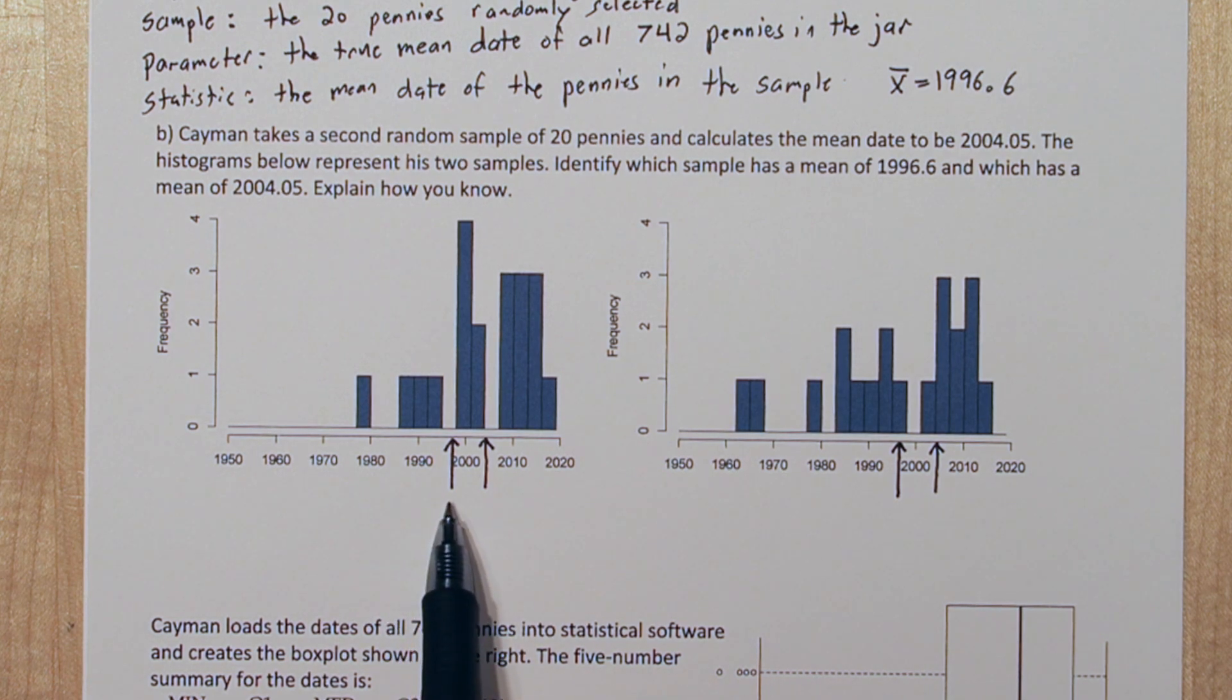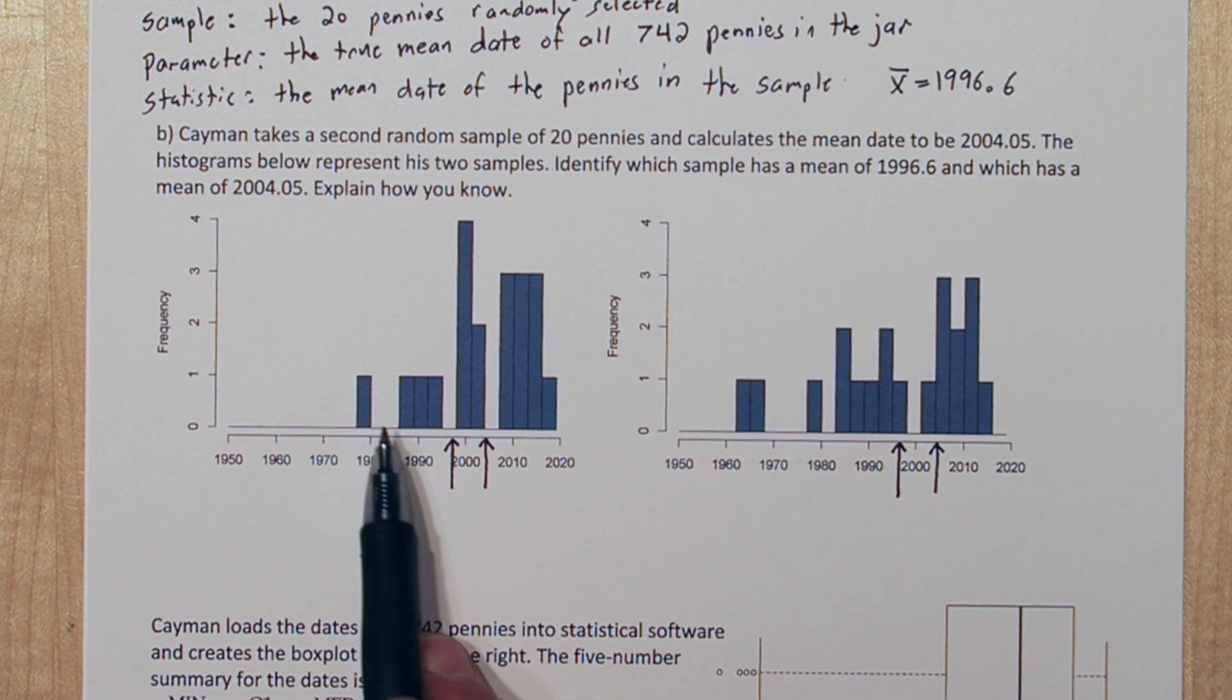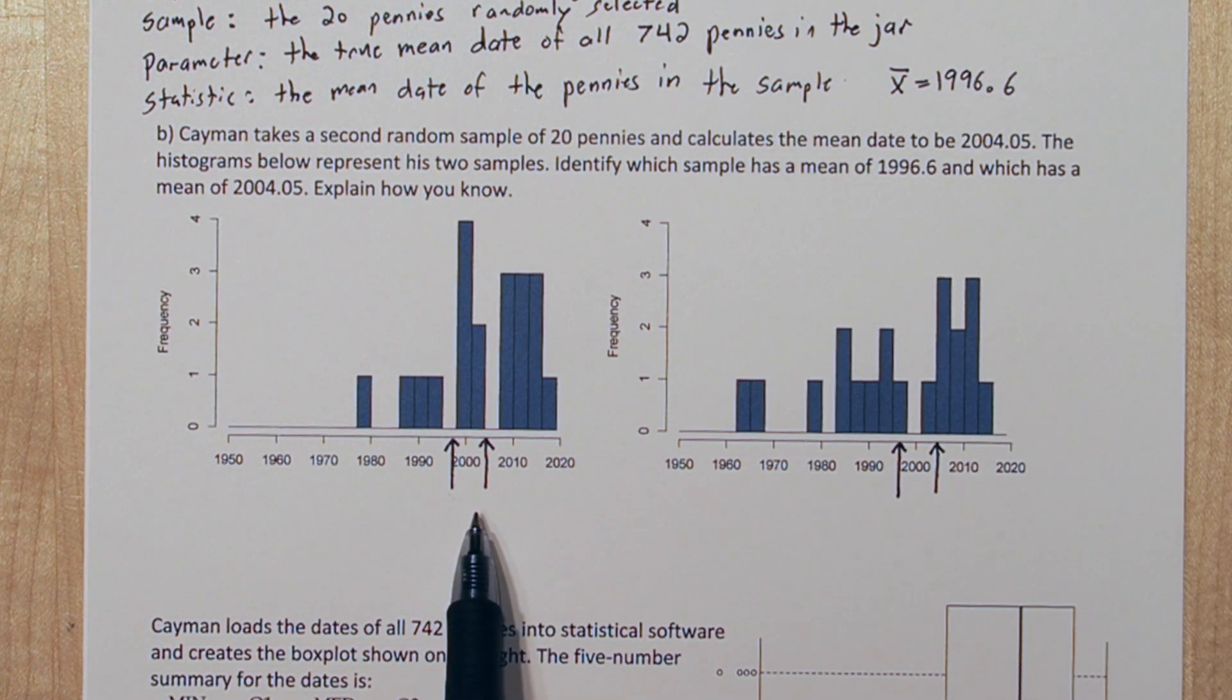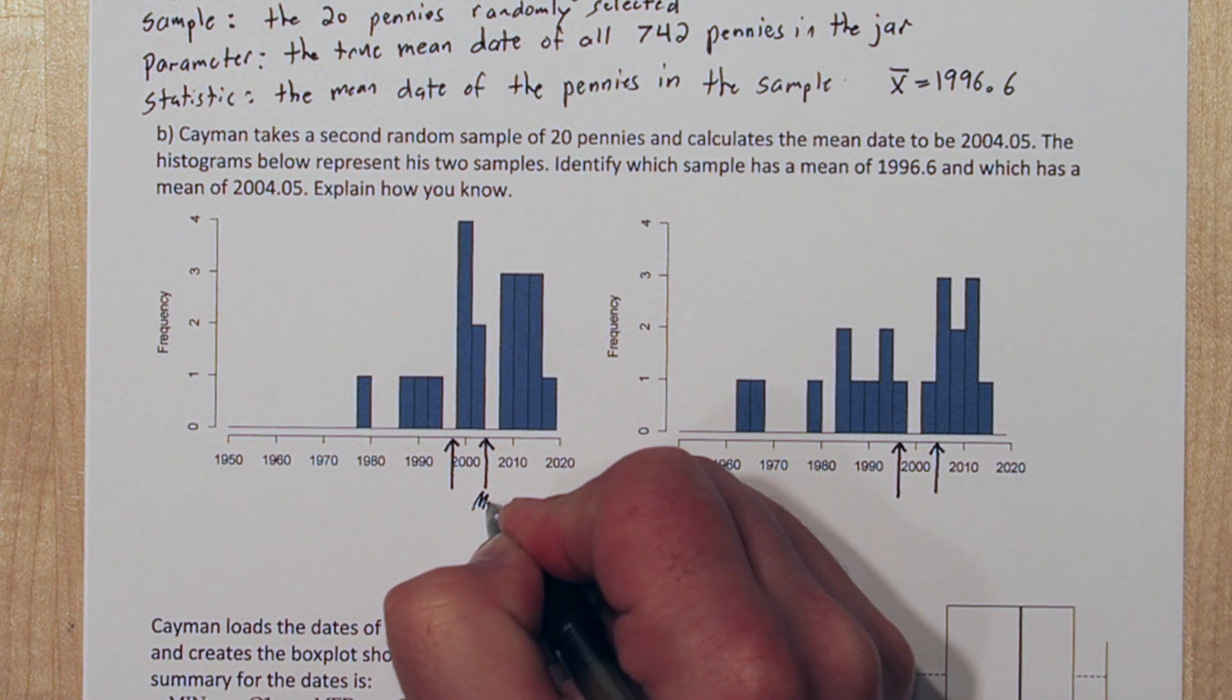Looking at the first sample, there's no way it would balance right here. There's not enough weight on this side, so this seems to be the balancing point, so this must be the mean right here.